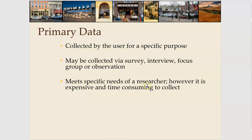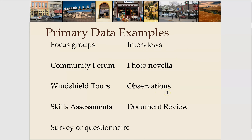The benefit of primary data is that it is related to exactly what you need to know, whereas secondary data covers a broad range of topics and you have to find what's relevant. But because primary data is so specific and you're collecting it yourself, it's very time-consuming and much more expensive than finding articles or websites.